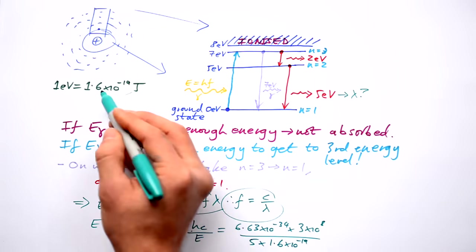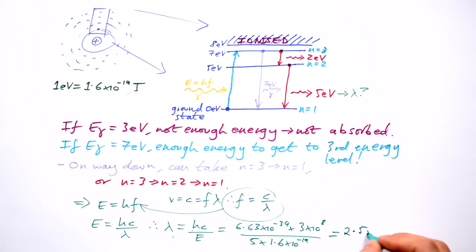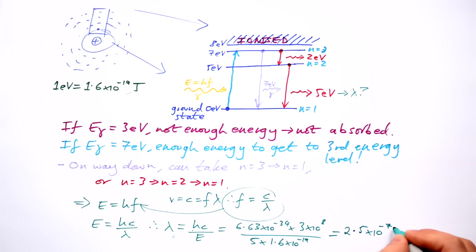We never put electron volts straight into an equation. That's going to give us a wavelength of 2.5 times 10 to the minus 7 meters or about 250 nanometers. Pretty much visible light.